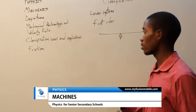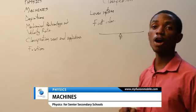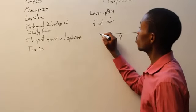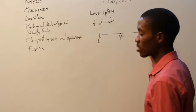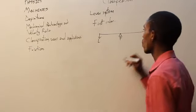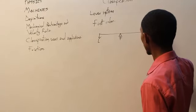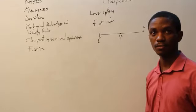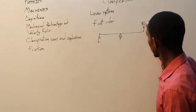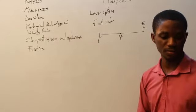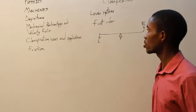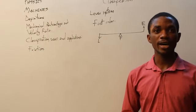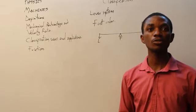In the first order, the middle accommodates the fulcrum. You can have your load on one side while your effort is on the other side. Examples of first order machines include the claw hammer, pliers, and most of our hand tools.